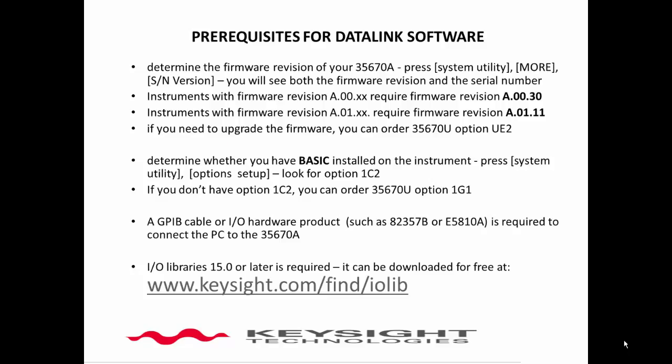There are four prerequisites required in order for the Datalink software to work properly. The first prerequisite is that the instrument must have the latest version of firmware. In order to determine the currently installed version of firmware, push the System Utility hard key located under the display of the 35670A, then push the F9 key, which is located at the bottom right-hand corner of the display. It is next to the soft key labeled S/N version. You'll see both the serial number and firmware revision displayed on the display.